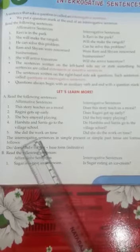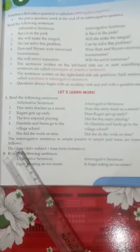In simple present tense, interrogative sentences are formed using 'do' or 'does', followed by the subject, then the object. In simple past tense, we have to use 'did', followed by the subject.